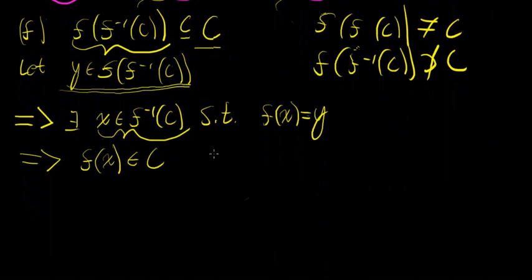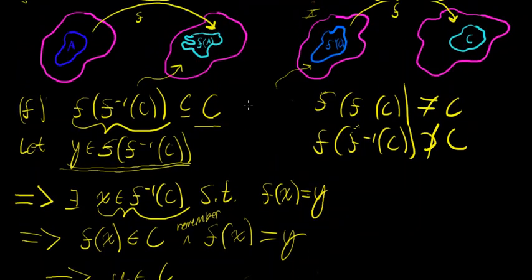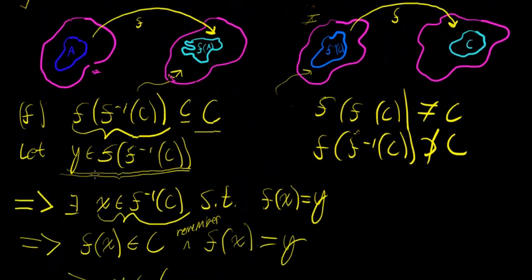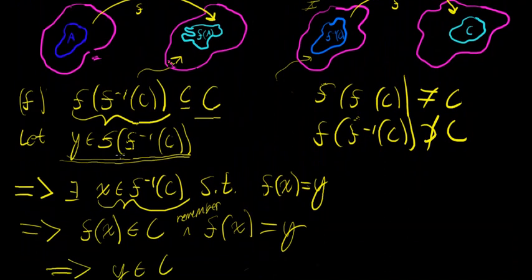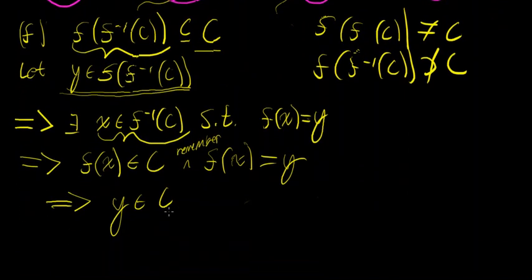Well, if f(x) is in C, and remember that f(x) = y, this implies that y is in C. And we're done — we've just proved exactly what the problem asked us to prove. We've shown that any y in the image of the inverse image of C must also be in C.